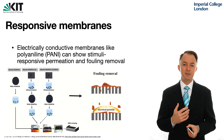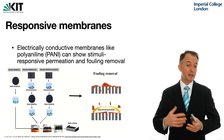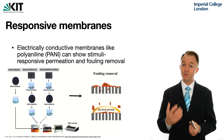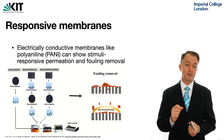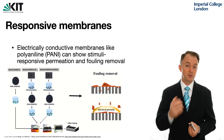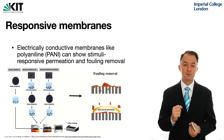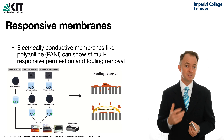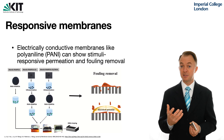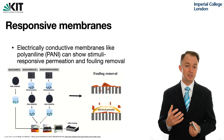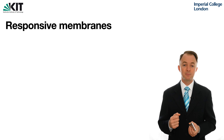An application at a more industrial scale is to look at anti-fouling membranes. Polyaniline is a very well-studied polymer that's been used in many membrane applications because it is electrically conductive. This is an interesting application where the application of electric potential can help to defoul the membrane.